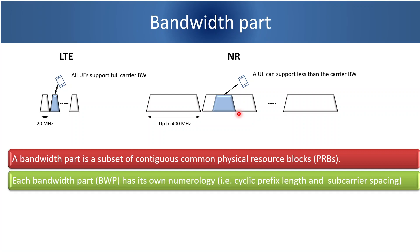There can be multiple bandwidth parts within the supported channel bandwidth by a UE. Each BWP or each bandwidth part can have its own numerology — that is, it may support different sub-carrier spacings: 15 kHz, 30 kHz, 60 kHz, and so on.